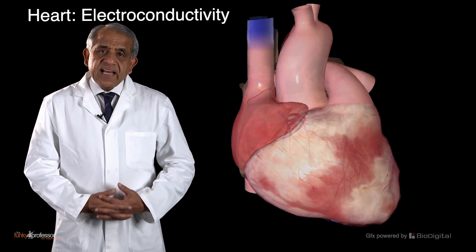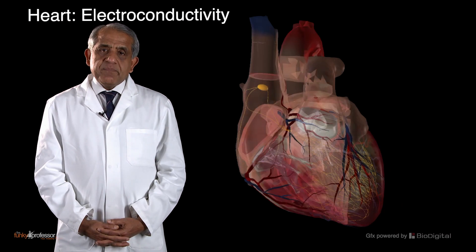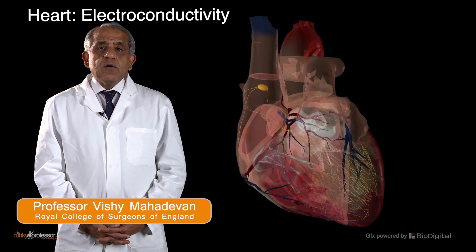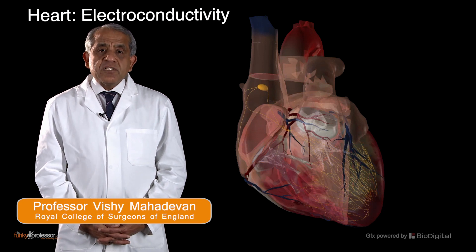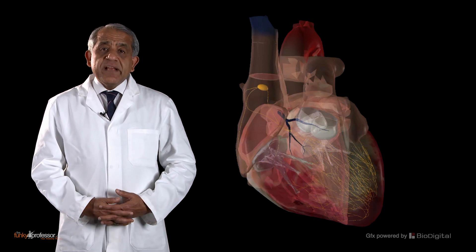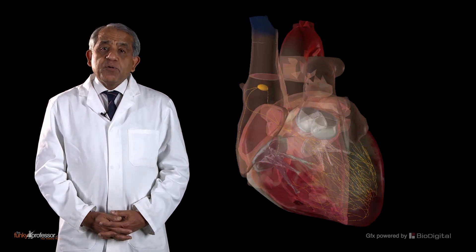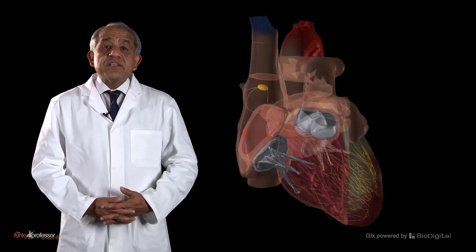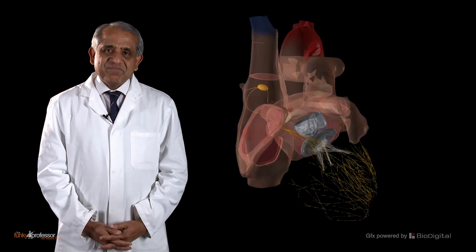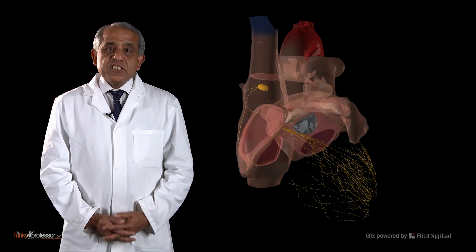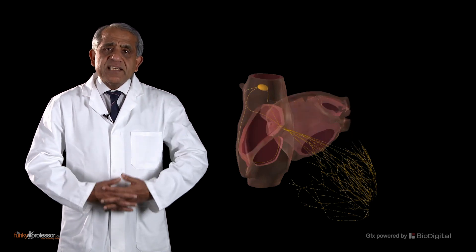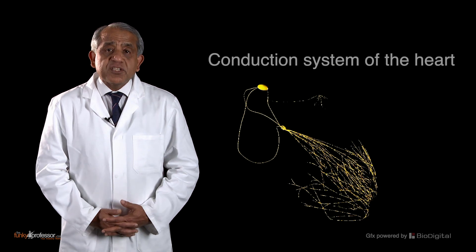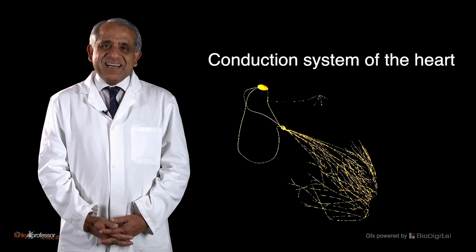The cardiac musculature are specialized muscle cells which are responsible for the generation and propagation of the electrical impulses which result in cardiac contraction. Collectively, these specialized cardiac myocytes make up the conduction system of the heart.